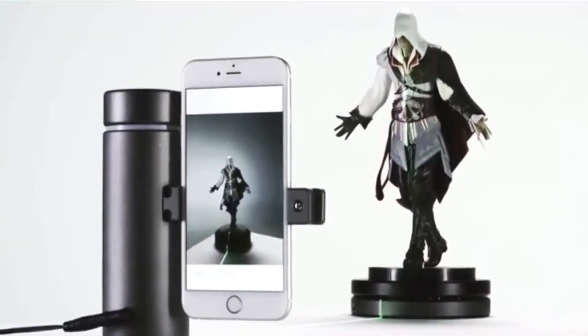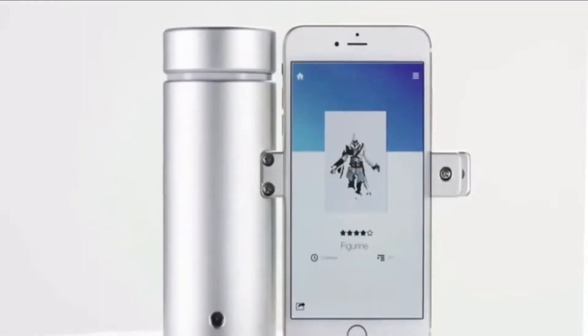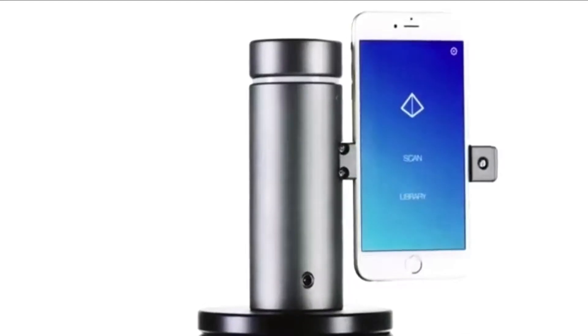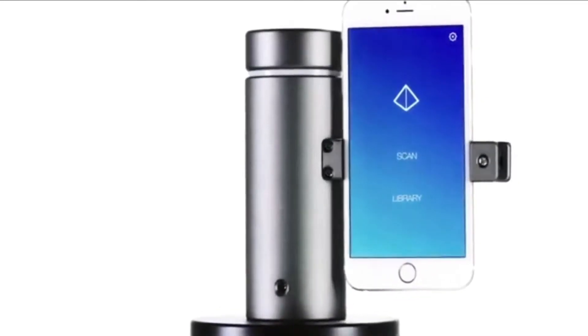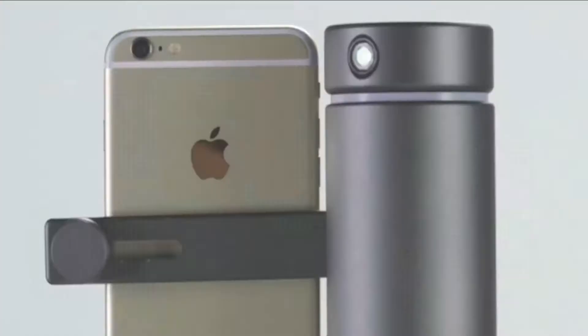It lets artists, makers and designers capture objects and surfaces and turn them into high-quality 3D models and use them as part of the creative process. We knew we had to use a smartphone. Modern phones are simply amazing. The Eora 3D scanner is powered entirely by your smartphone. Using it is easy. Just open the app and press scan. It'll automatically adjust focus and exposure and drive a green laser to scan your object.